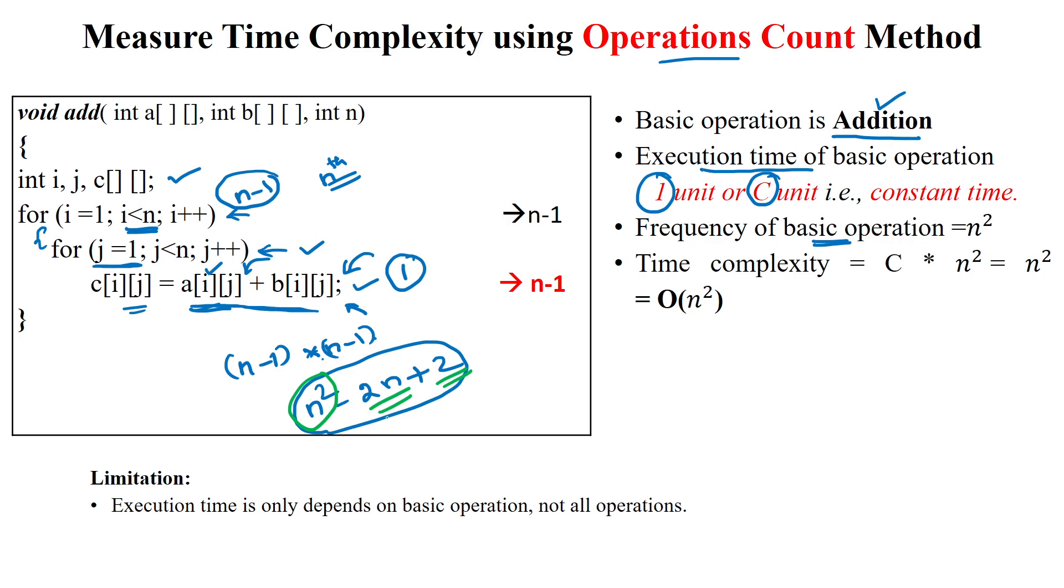As per the algorithm analysis procedure, we can ignore the lower order terms 2n plus 2. Then, higher order term is n square. So, the basic operation is executed for n square time. What is the time it is consuming for executing each time? Constant amount of time. So, here, it is 1. So, 1 into n square, we are getting n square. Finally, the upper bound time complexity for this algorithm is big O of n square.